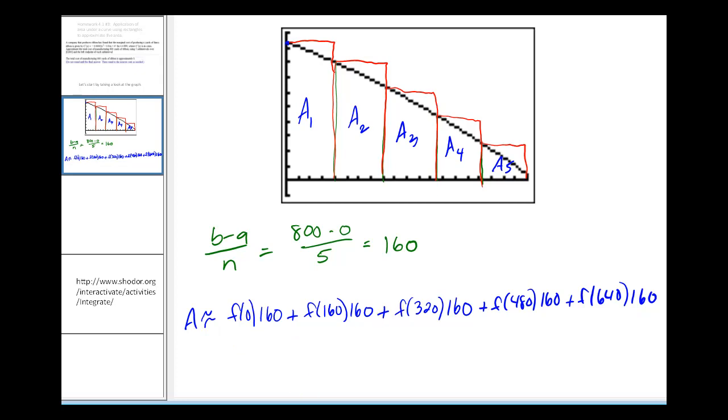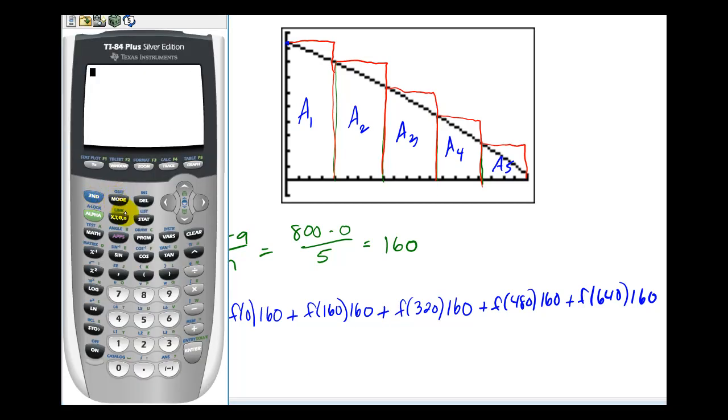To figure out these values, we can go back to our graphing calculator. I'm going to do it from the home screen. Because we have the function in y1, we can press vars, right over to yvars, press enter, select y1, and just use function notation from here.